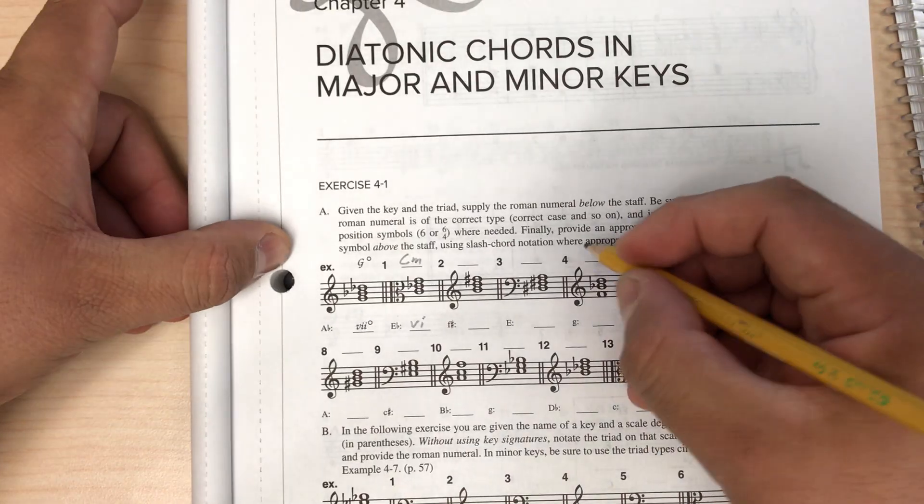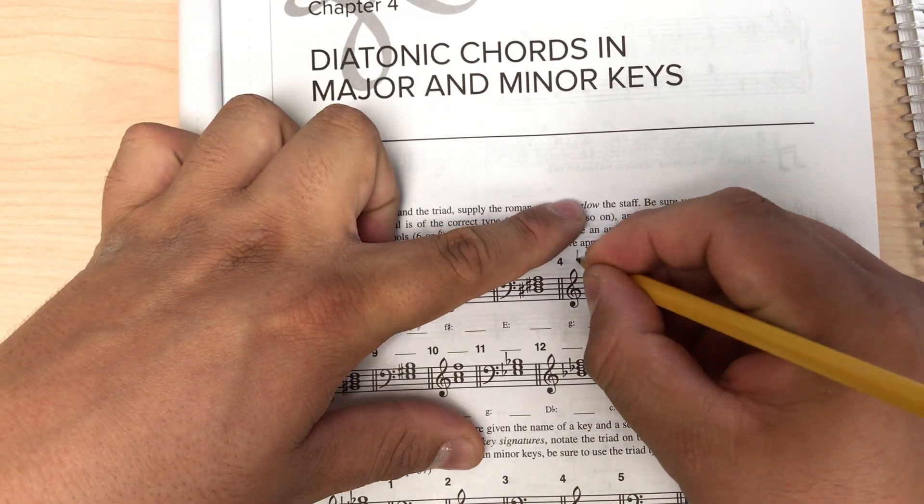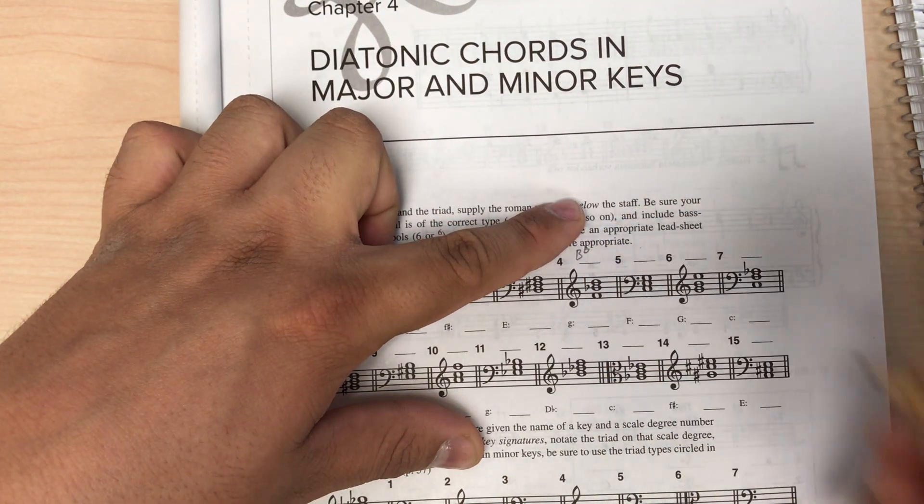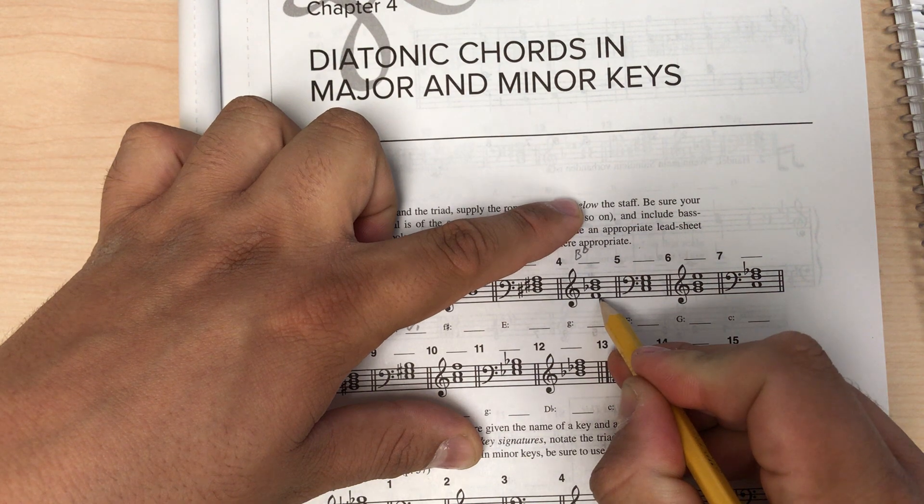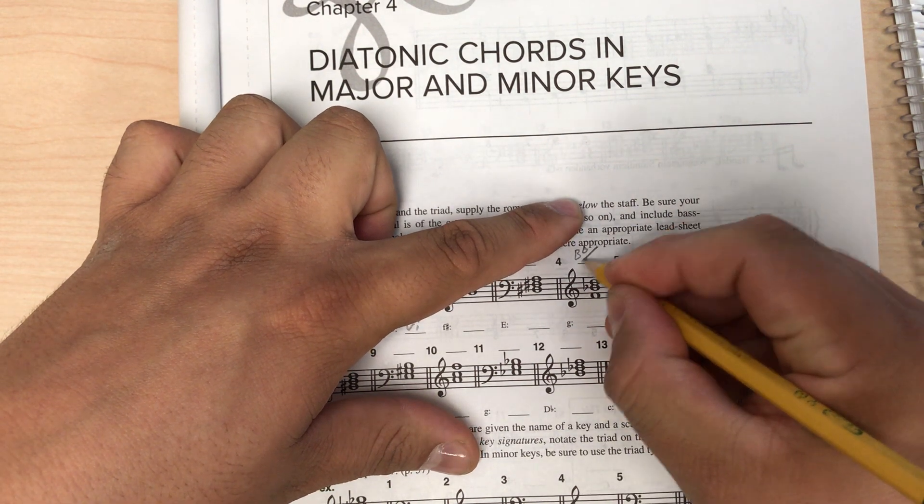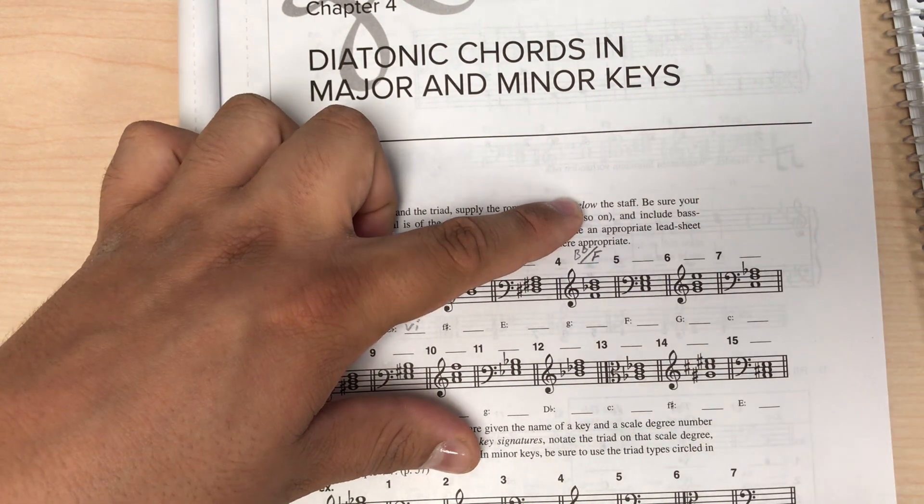So if we go back here, we can put in, this is a B flat major chord, but it has an F as the base note. So I'll put a diagonal slash F. Now we'll do the same thing that we did before. We're going to put it in context of G minor.